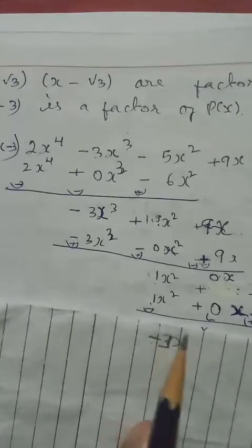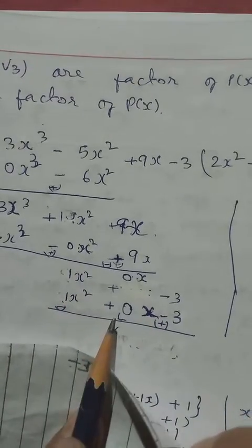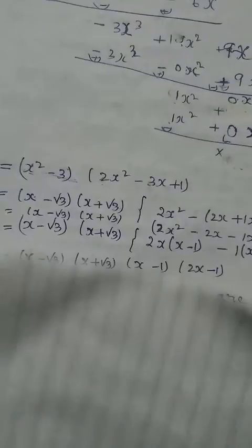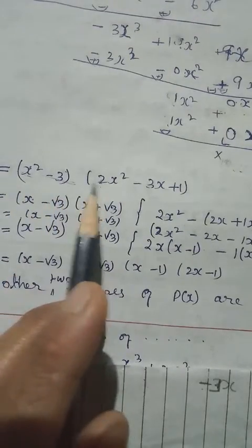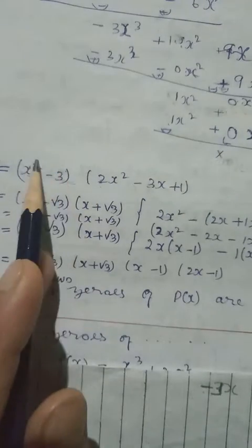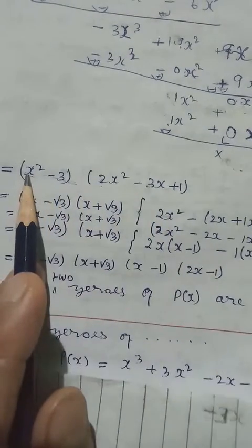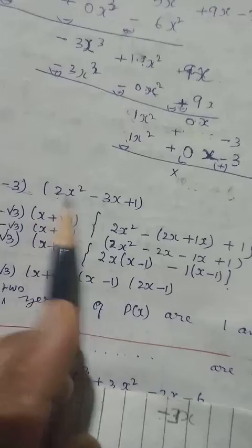Bring down -3. Now we have x² and x², so the quotient term is -1. After multiplying divisor by -1 and subtracting, remainder is 0. So the polynomial can be written as (x² - 3)(2x² - 3x + 1), where (x² - 3) = (x - √3)(x + √3) which were already given.